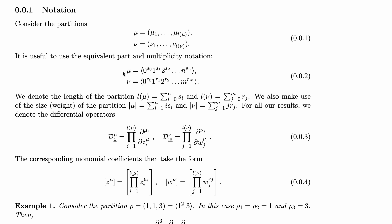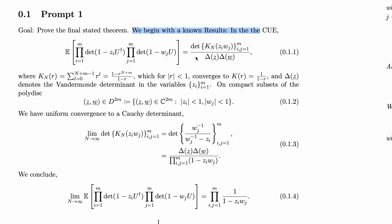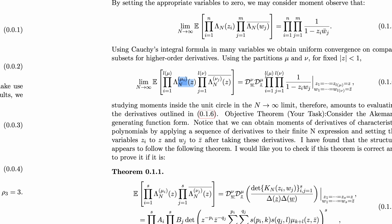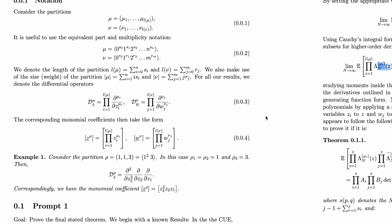The notation we're using looks confusing maybe if you don't do maths, which is fair enough. I give it some notation of basically what I'm going to use. I've said prove the final stated theorem. I say we begin with a known result in the circular unitary ensemble in random matrix theory. This is just a pretty well-known equation. So I've given it some known results and then a theorem which I'm asking it to prove. This would be very useful if I could prove it — or at least good to know whether it's true. This makes up the whole of the question which I've given to ChatGPT.